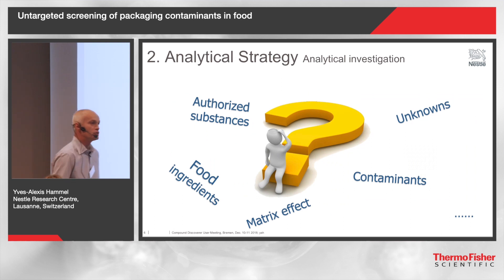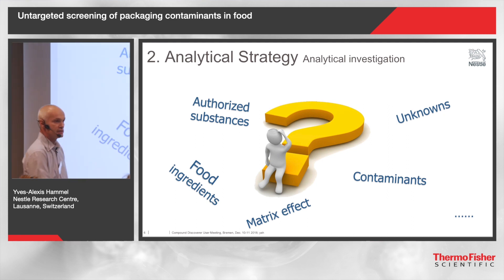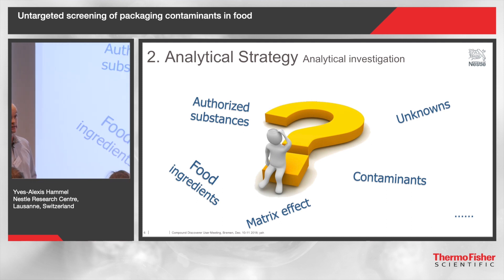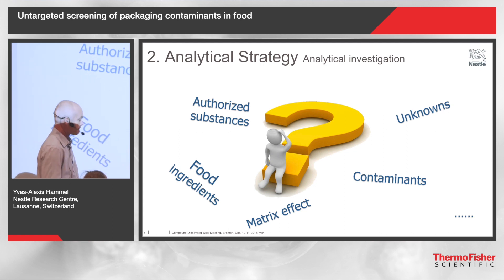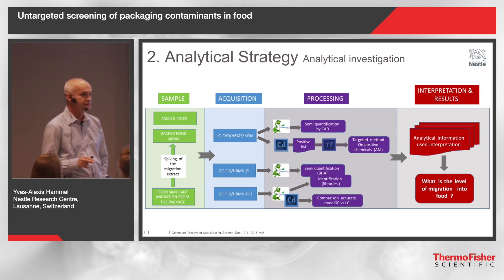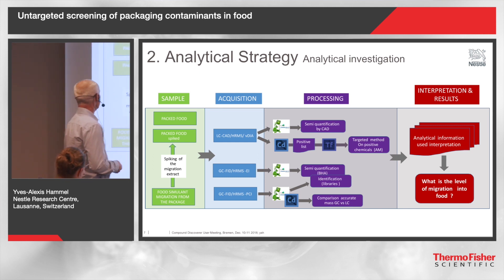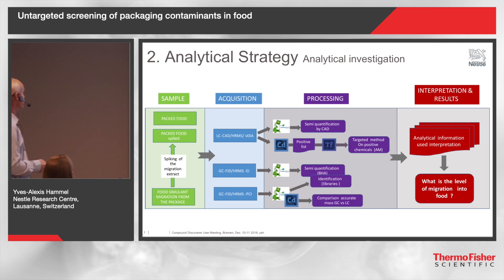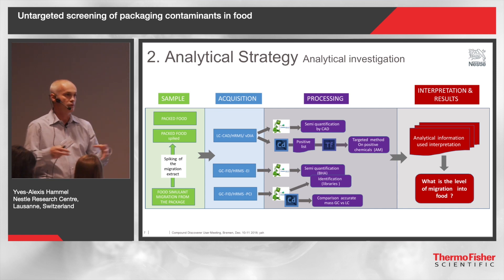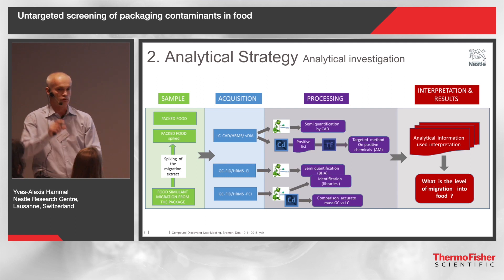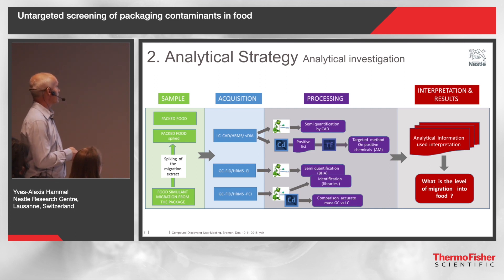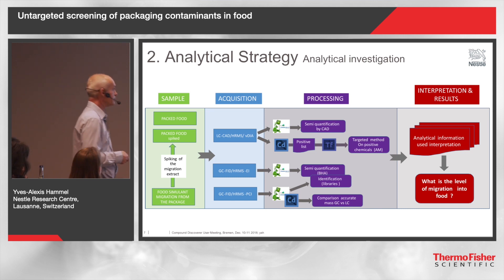What is the good strategy to look for unknowns? We have authorized substances, real unknowns, contaminants, and food ingredients, which could represent a large part of our sample. Here is the workflow I propose. First, I take the bottle, add solvent, and concentrate it down to one milliliter — this becomes my food extract. Then I use this extract to spike food: one sample with spiking and one without.